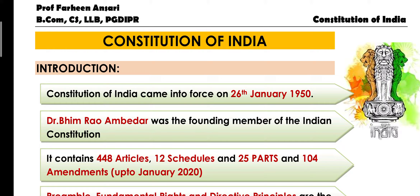There are many countries in the world where constitutions are very small and uncodified — meaning there is no particular written form of constitution. But India's constitution is the lengthiest constitution, containing 448 articles, 12 schedules, and 25 parts. The latest amendment as of January 2020 is the 104th amendment.